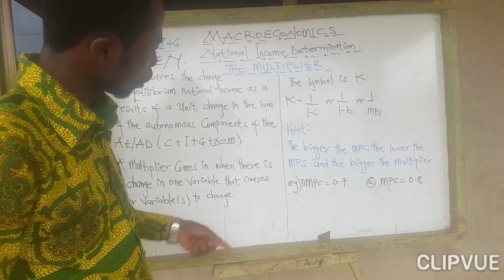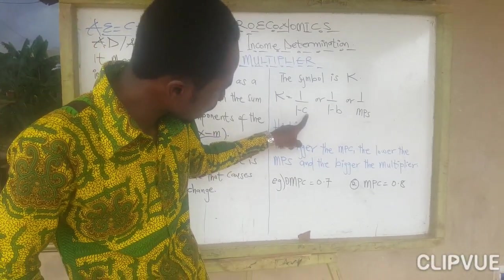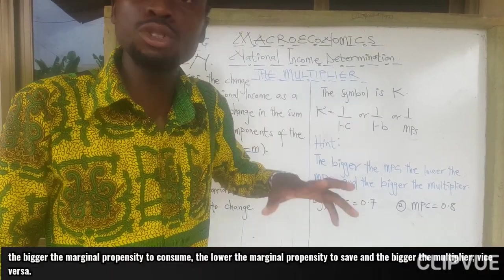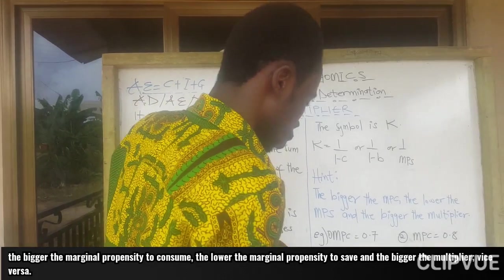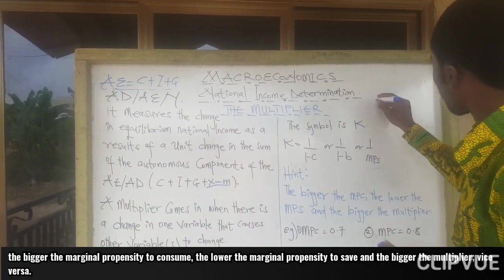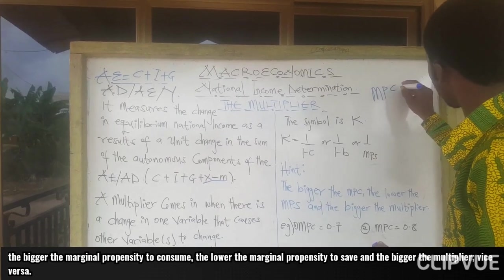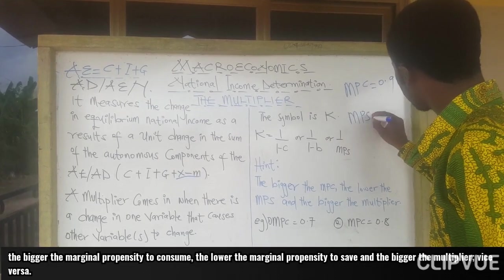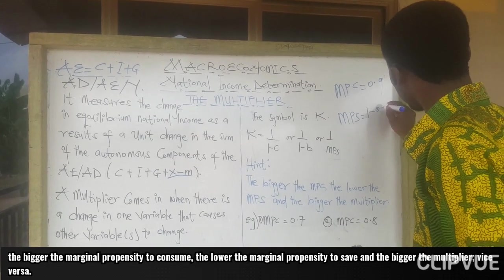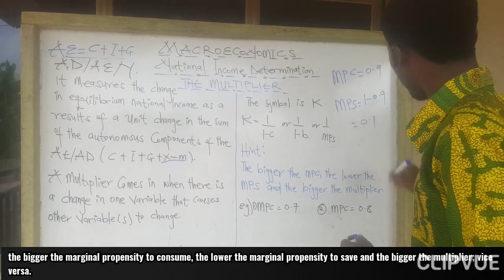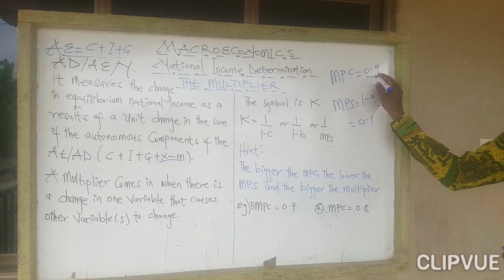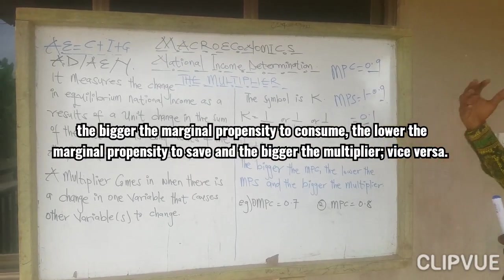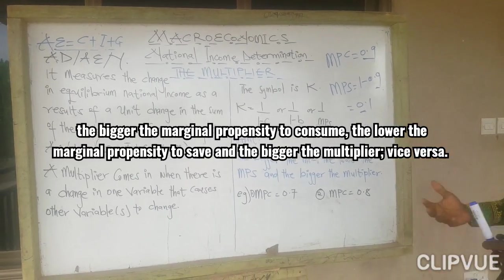Now be very careful: the bigger the marginal propensity to consume, the smaller the marginal propensity to save. For example, if MPC = 0.9, then MPS = 1 − 0.9 = 0.1. So the bigger the MPC, the smaller the MPS.